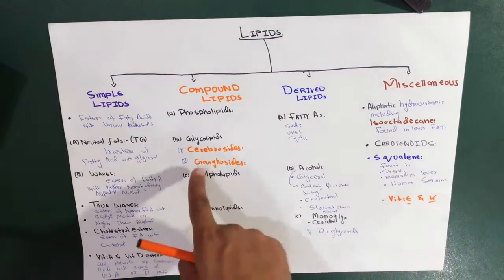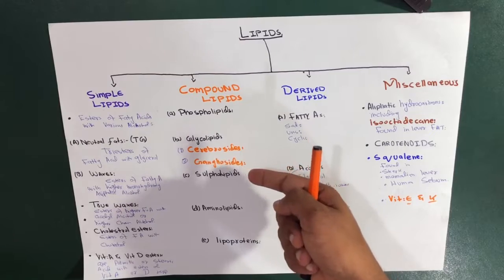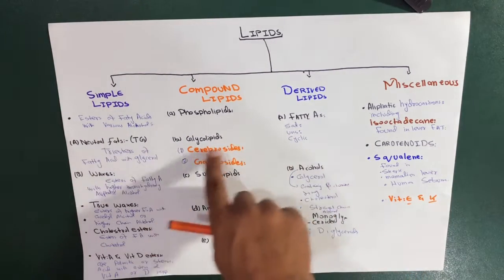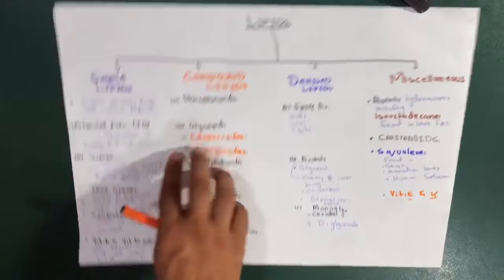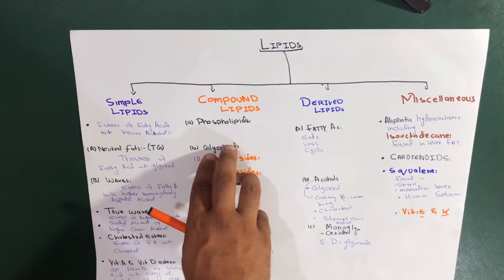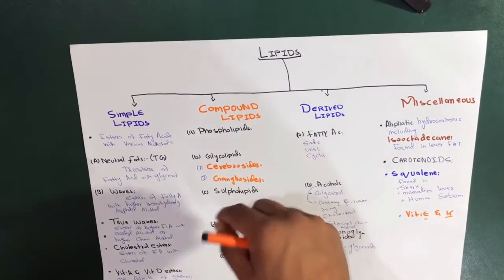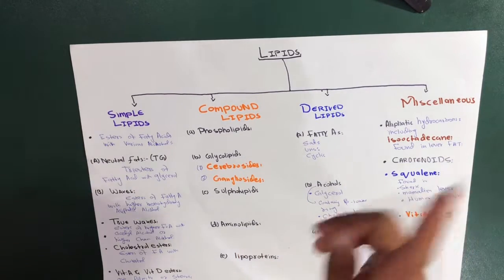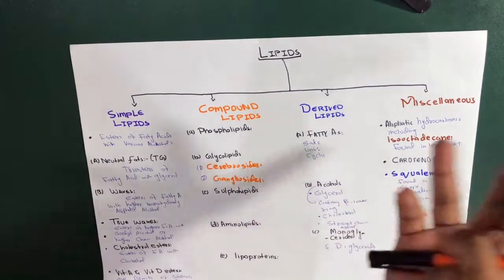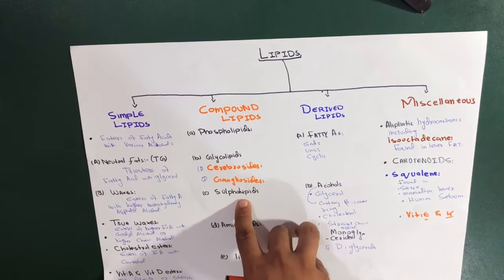Glycolipids are of two types: cerebrosides and gangliosides. Glycolipids are lipids containing carbohydrate. They have a special alcohol called sphingosine or sphingol, and also contain a nitrogenous base in addition to fatty acids. Importantly, they do not contain phosphoric acid or glycerol — their special alcohol is sphingol.